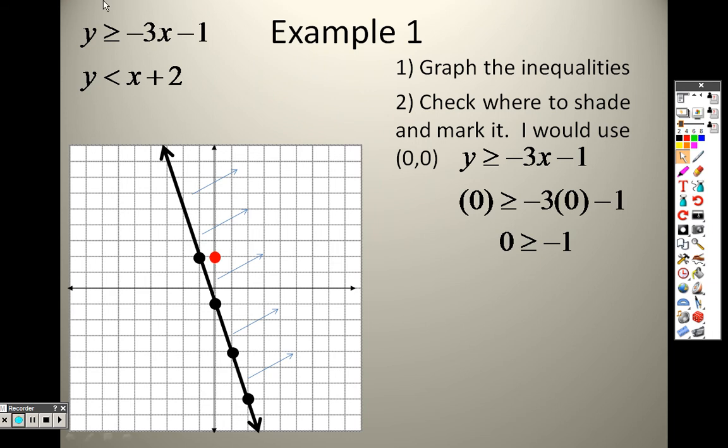Next up, I graph this one. So, the y-intercept is at positive 2. And I go up 1, over 1, up 1, over 1, up 1, over 1. But, because it's less than, it's a dashed line. So, that's supposed to be a dashed line there, not a solid line. That's supposed to be a dashed line. So, keep that in mind.